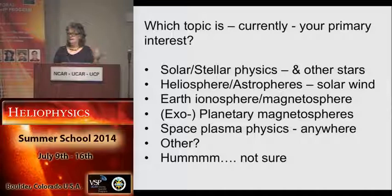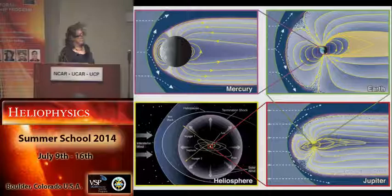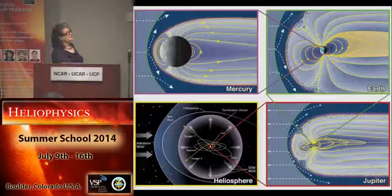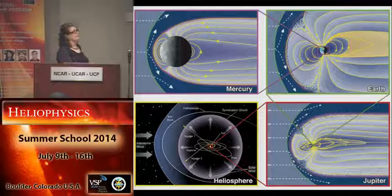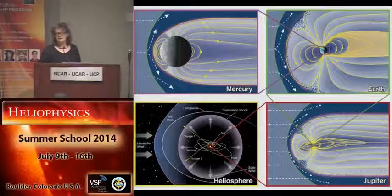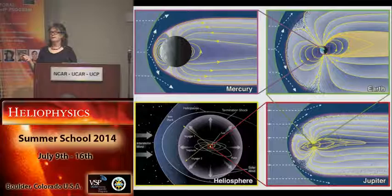So let's think about magnetospheres. This diagram: the way you're supposed to read it is that the whole magnetosphere of Mercury fits within the Earth, the whole magnetosphere of Earth fits within Jupiter, and then the whole magnetosphere of Jupiter is small on the scale of the heliosphere. If you think about how the magnetosphere of Mercury scales with the heliosphere, it's about seven orders of magnitude.